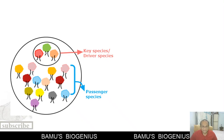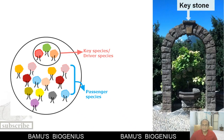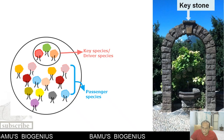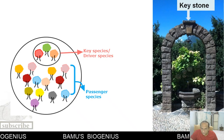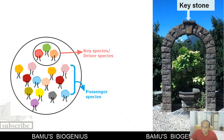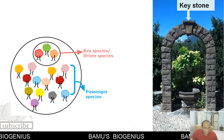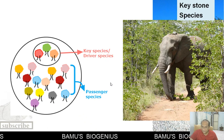The name 'key species' or 'keystone species' comes from the keystone in an arch — the central stone upon which all other stones depend. If the keystone is removed, the whole arch collapses. Similarly, in an ecosystem, some species are keystone species that are more important than others.